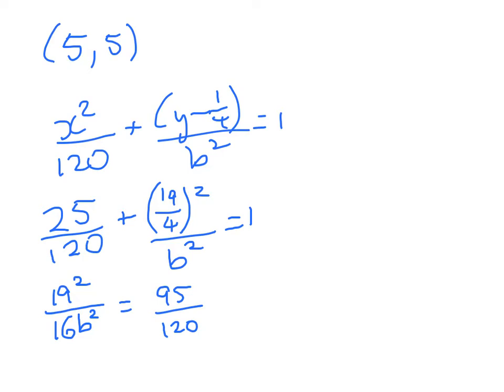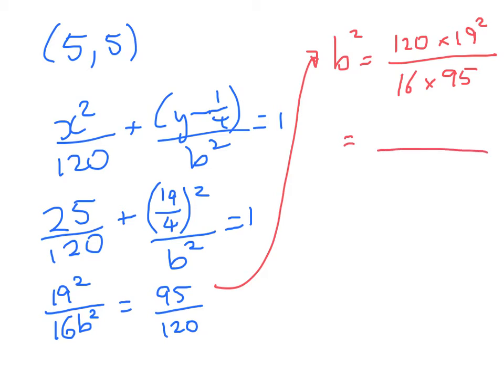I know most of you at this point are going to groan and reach for your calculators, but I am going to keep this in fractions because we get a really nice answer and it is worthwhile doing these and getting exact answers. So we're going to get b squared is equal to... Just rearranging that a little bit. 120 times 19 squared divided by 16 times 95. So 95 is 5 times 19, and here we're going to get 30. Let's just first knock out a few common factors. So 30 over 4 times 19 here, and we're just left with 5 down here. So that's going to give me 3 times 19 over 2. That's right, equals 57 over 2. So that's my b squared.